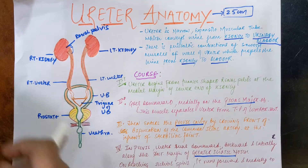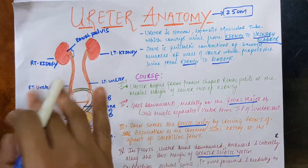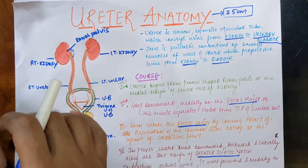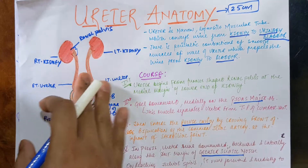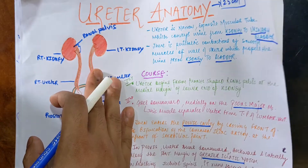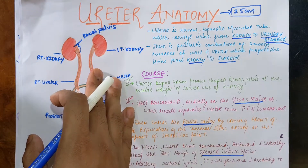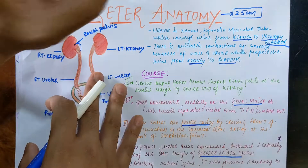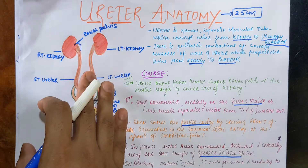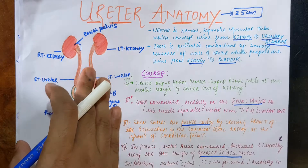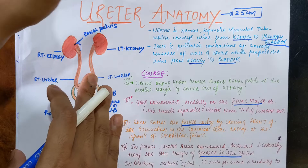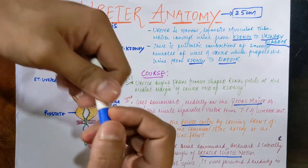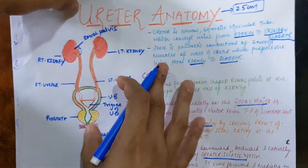Let's start with the topic of the anatomy of the ureter. The ureter is a paired organ starting from the renal pelvis area, that is the kidney, and it conveys urine from your kidney to the urinary bladder. It is a muscular, narrow tube which serves as the pathway for conveying urine from your kidney to the urinary bladder.